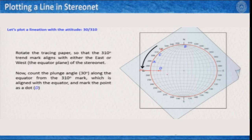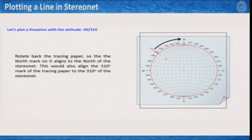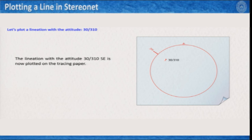Once done, count the plunge angle of 30 degrees along the equator from the 310-degree mark and mark that point as D. In this stereonet each grid is 10 degrees, so count 10, 20, 30 — and arrive at point D. Then rotate the tracing paper back so that the north mark aligns to the north of the stereonet, which simultaneously aligns the 310-degree mark. This rotation also moves point D to its final position, and this point D is the plot of the lineation with attitude 30/310 on the stereonet.